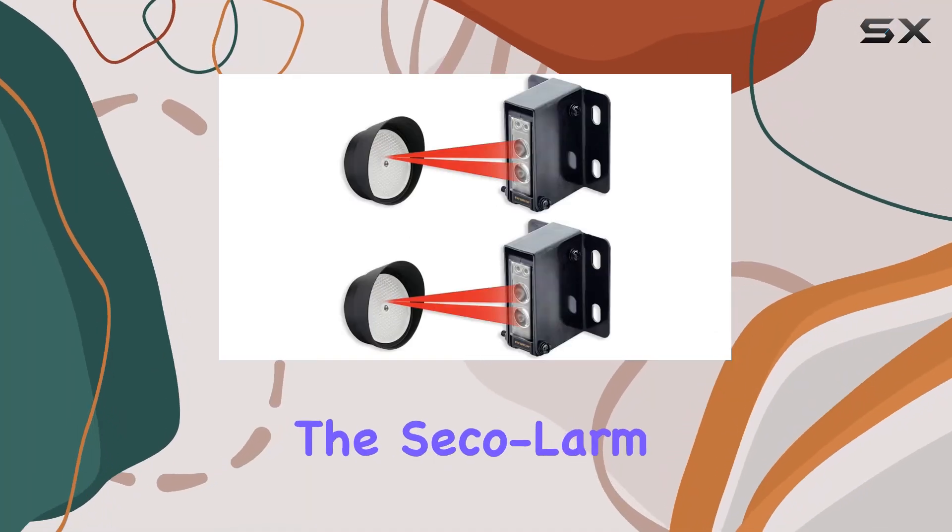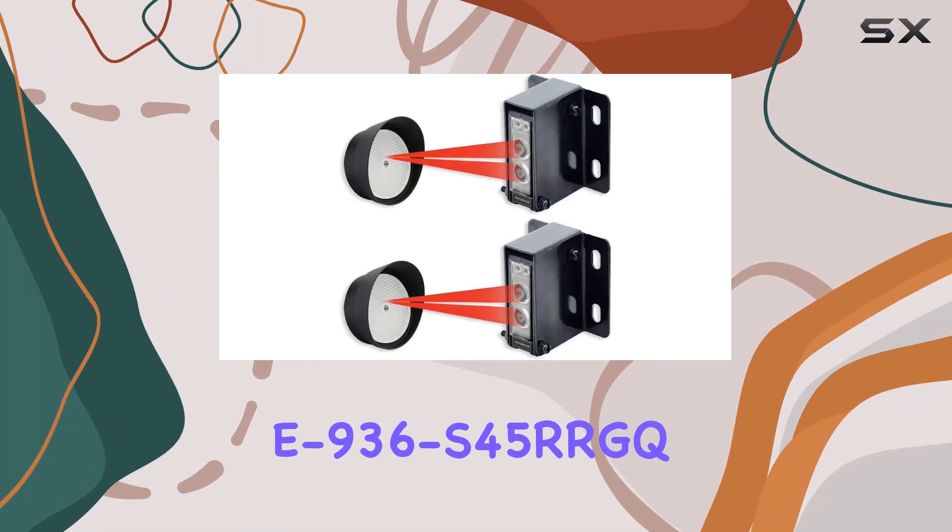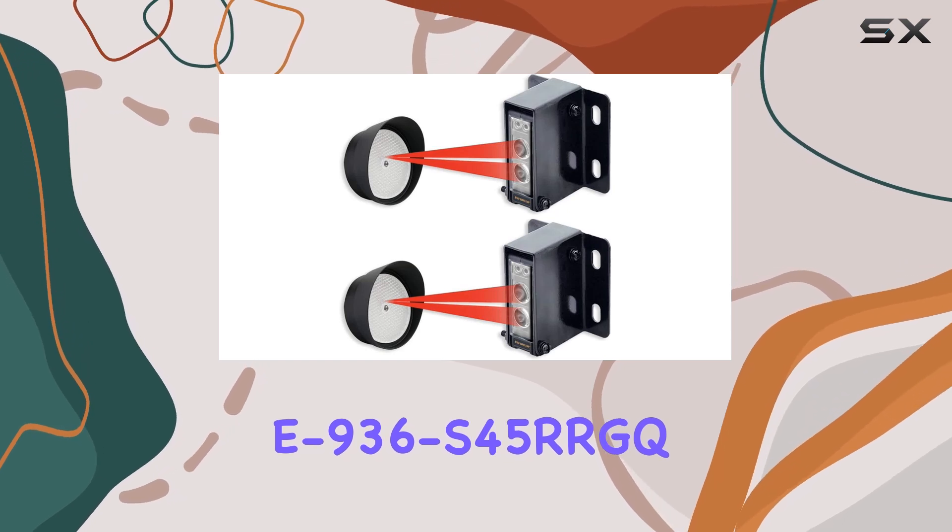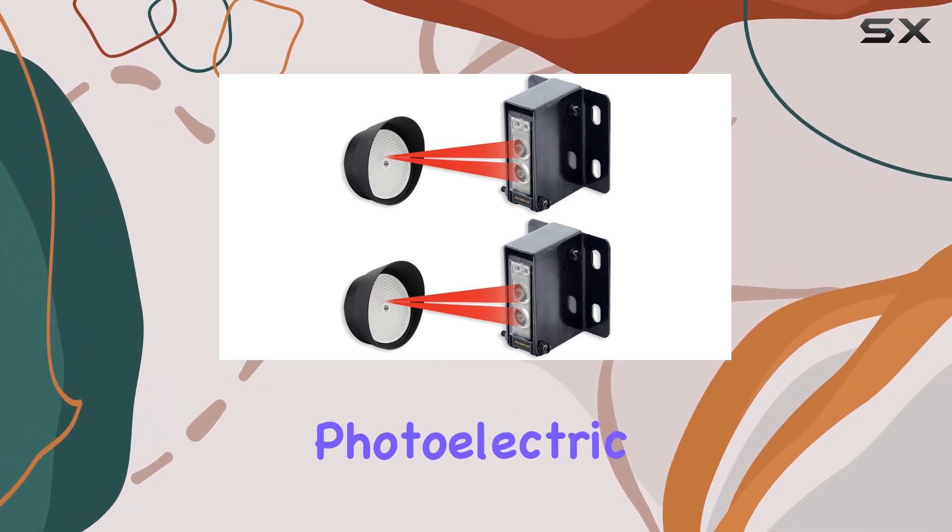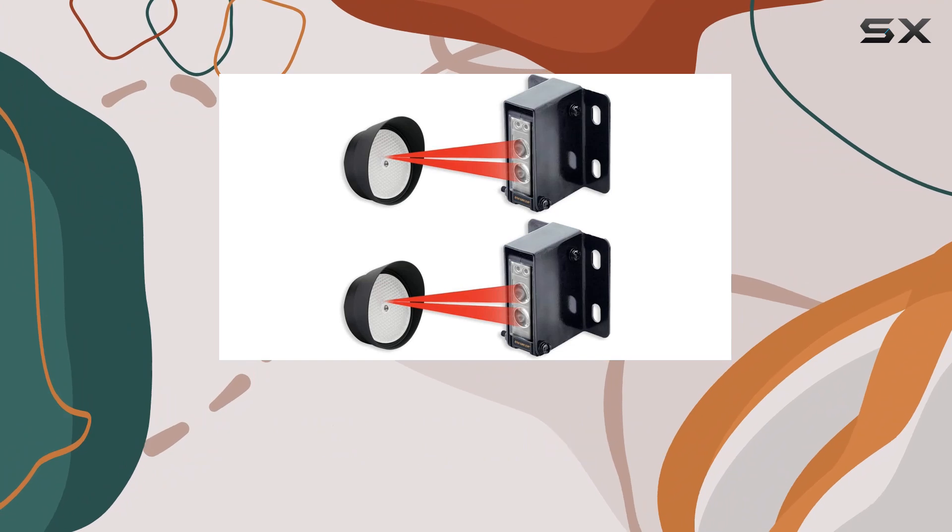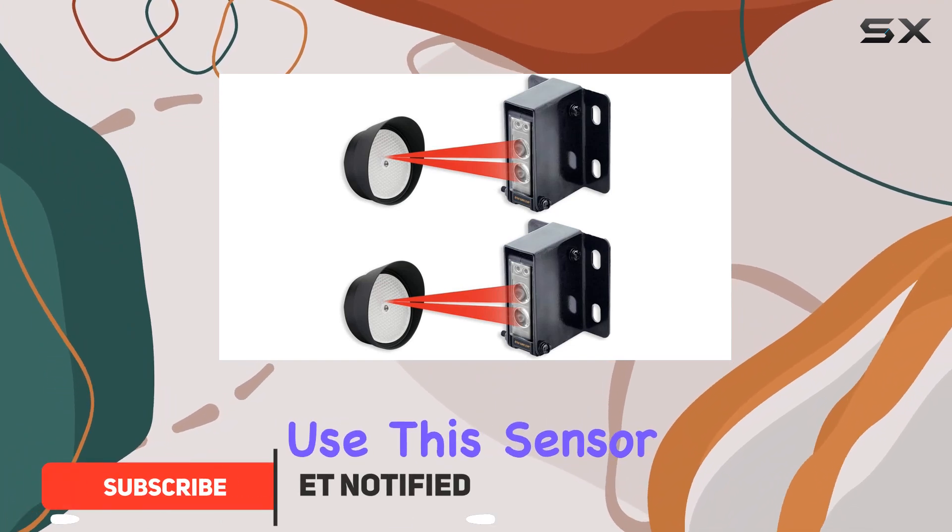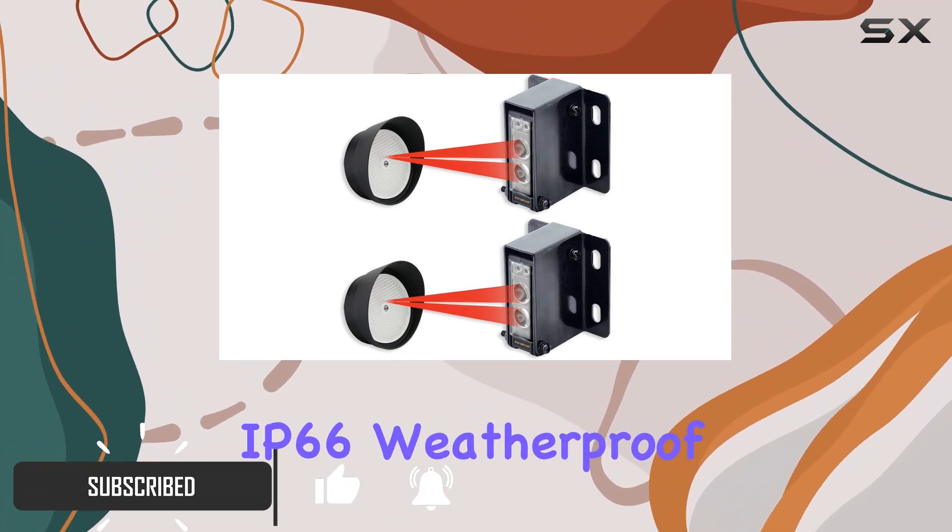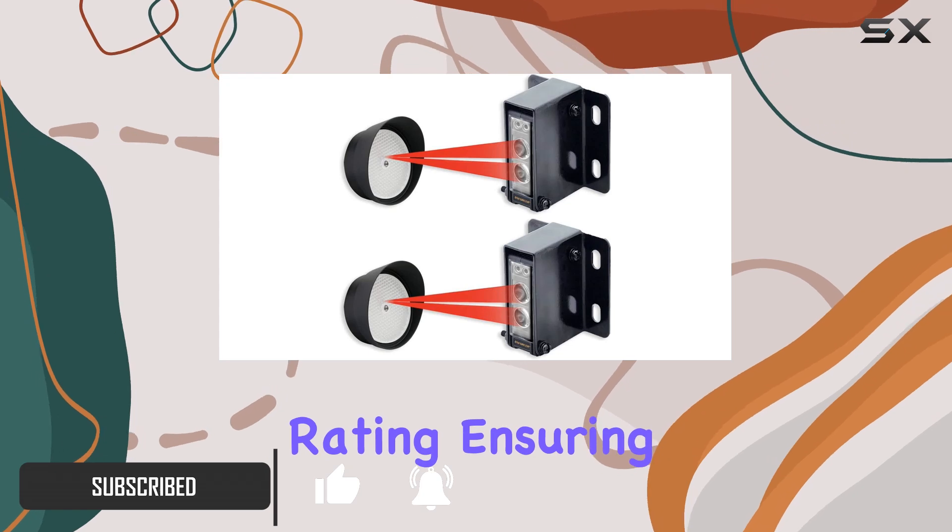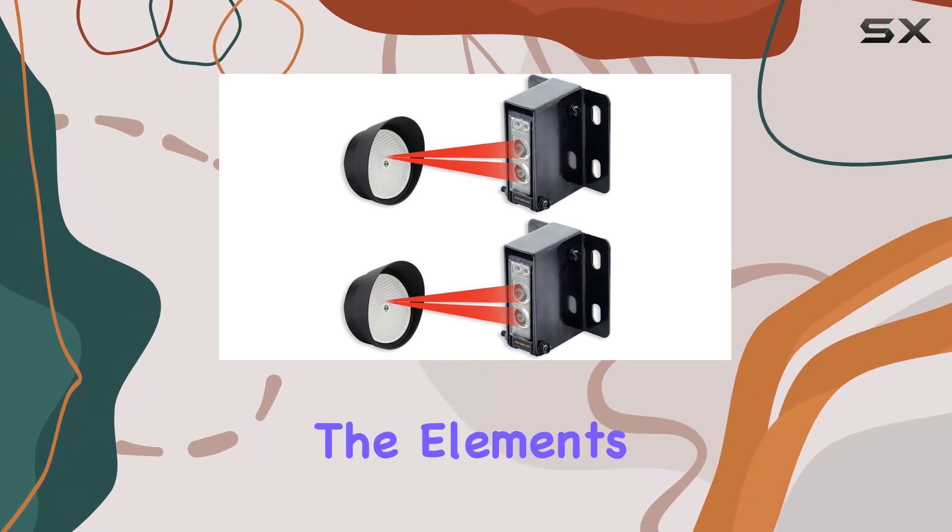Today, we're diving into the Sec Alarm E936 S45 RRGQ Retro Reflective Photoelectric Beam Sensor. Designed for both indoor and outdoor use, this sensor boasts a robust IP66 weatherproof rating, ensuring durability against the elements.